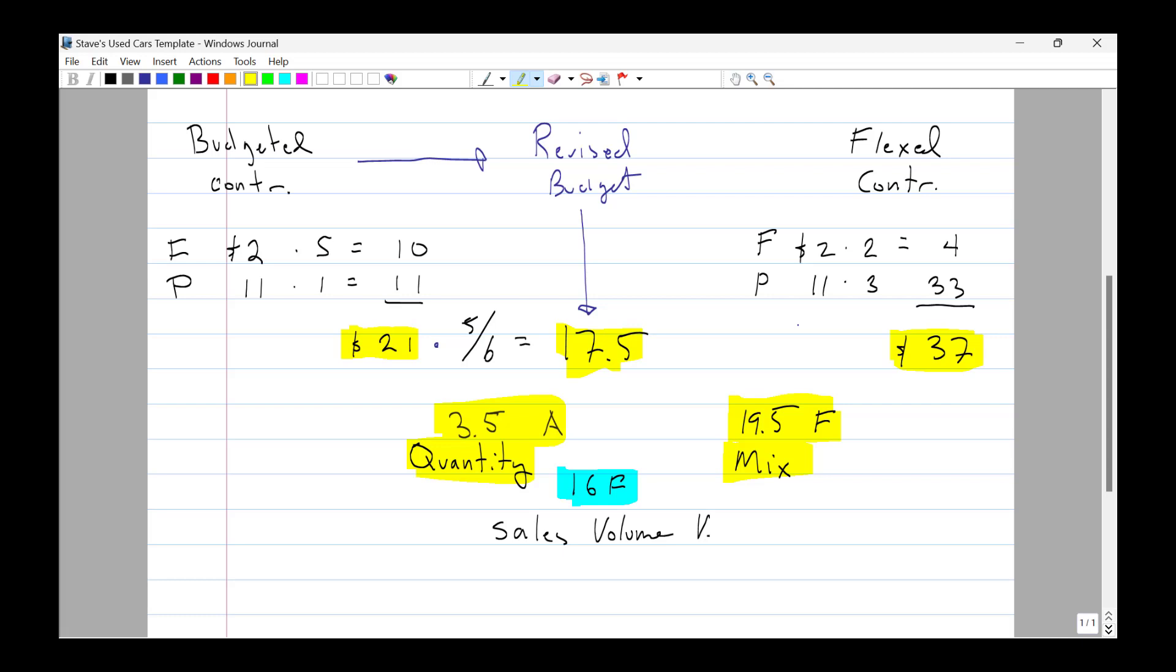Performance management team. There you have it. The sales quantity variance is adverse by 3.5. That tells us profit is lower by 3.5 due to selling fewer units. However, in those fewer units, we had an improved product mix. We sold a greater percentage of the Porsches. So the mix variance is favorable. Those two numbers net to the sales volume variance. Ladies and gentlemen, that's a wrap on sales quantity and sales mix variances. I hope you found this video useful. If you did, you can give it a like. And you can also view my performance management playlist, which is right here. Good luck on your upcoming PM exam.